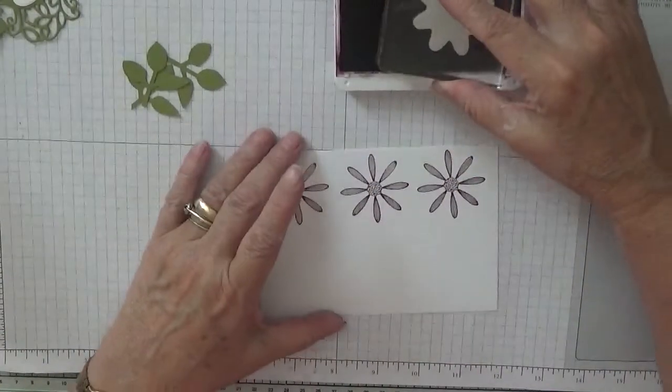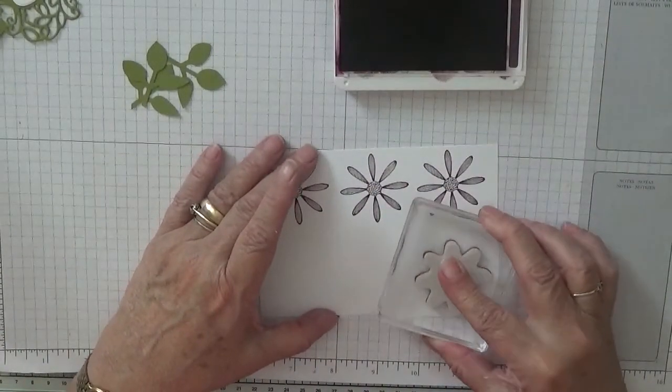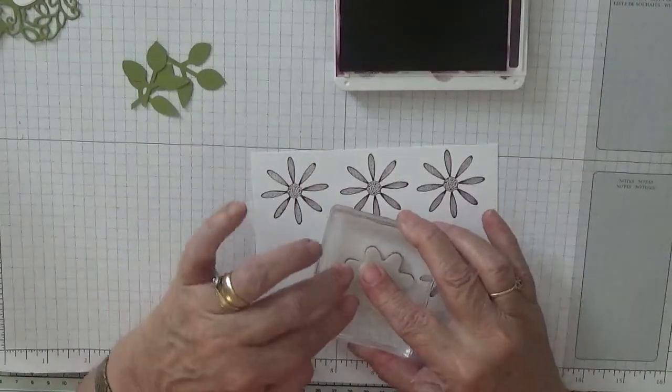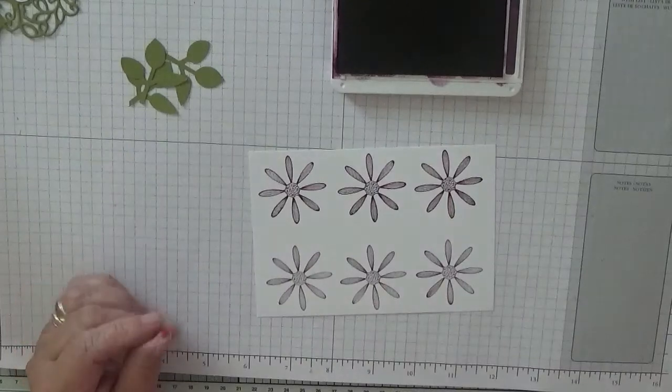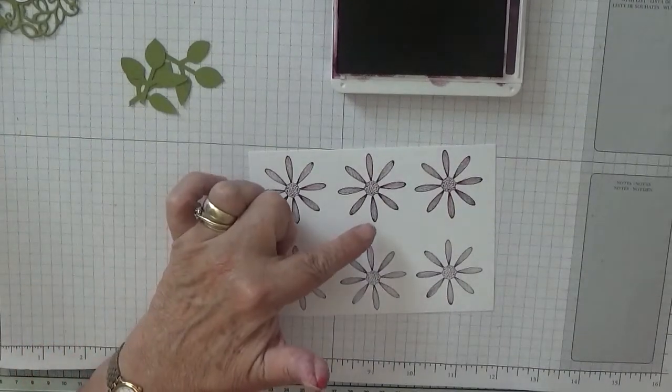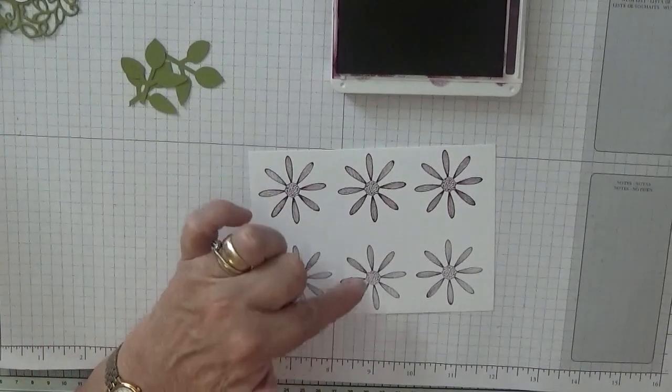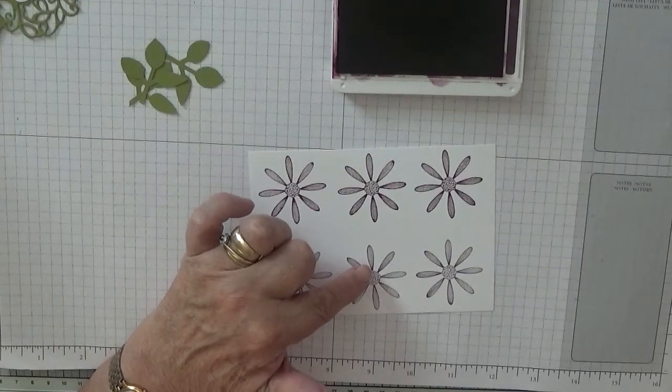Right, with Blackberry Bliss, we need three of these. So one, two, three. Have you notice the Rich Raspberry is actually darker than Blackberry Bliss? Odd.